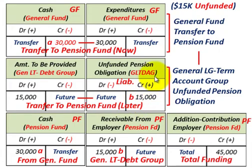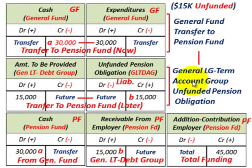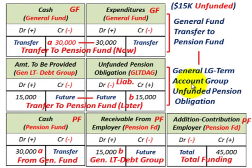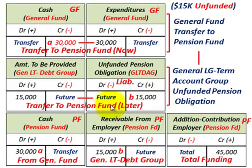When you see an unfunded portion of a pension, it has to go through the general long-term debt account group. That general long-term debt account group is associated with the general fund because the general fund is going to pay for this — but since it's long-term debt, we separate it out into the general long-term debt account group. So we transferred $30,000 now and set up the remaining $15,000 to be transferred in the future to the pension fund.